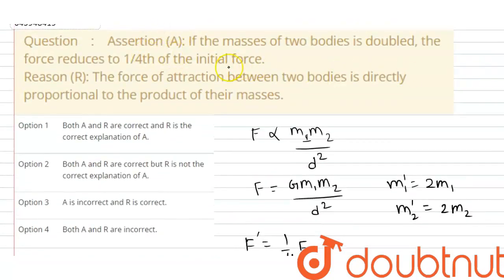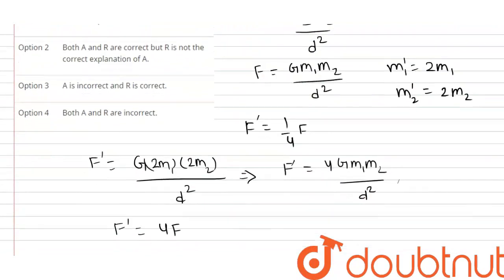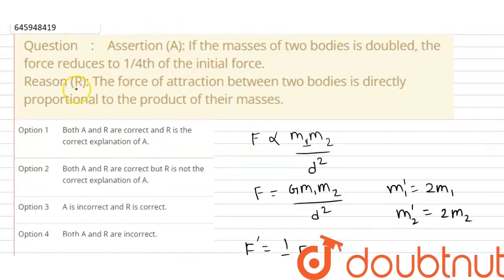So Assertion A, yeh wrong statement hai. Kyuong ki, hameh day rakhah hai ki yeh one fourth time hoja ta hai initial force ka. But yeh four time ho raha hai initial force ka. Ab haem reason R ko check kertate hai. The force of attraction between two bodies is directly proportional to the product of their masses. This is the right statement. Kyuong ki hameh directly proportional ho ta hai M1 M2 ki, kyuong ki hameh ki joh product ho ta hai, is ki directly proportional ho ta hai.